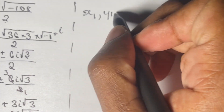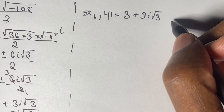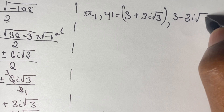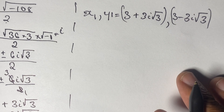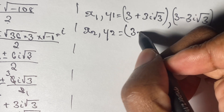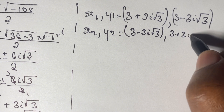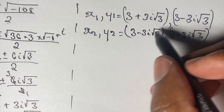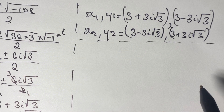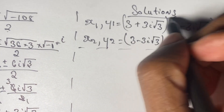So we have our pairs of solutions for x and y. We have (x₁, y₁) as (3 + 3i√3, 3 − 3i√3). We can put these in brackets to avoid confusion. And we also have our second solution (x₂, y₂) as (3 − 3i√3, 3 + 3i√3). These are our solutions, and we will verify them shortly.